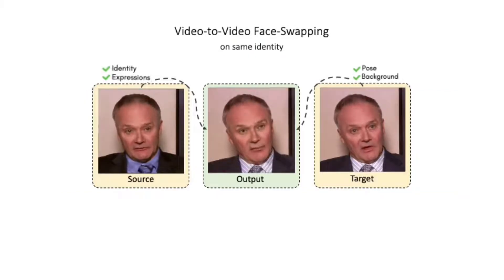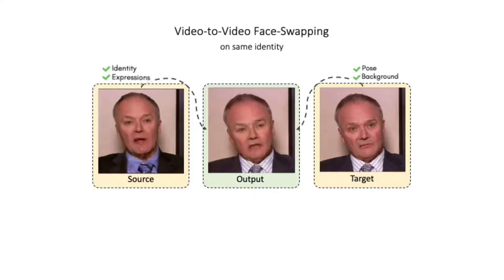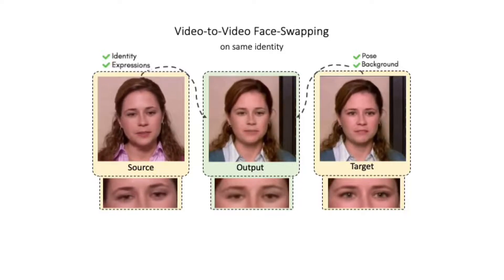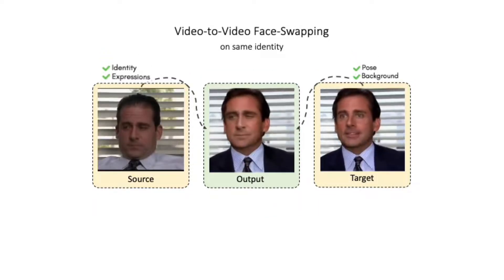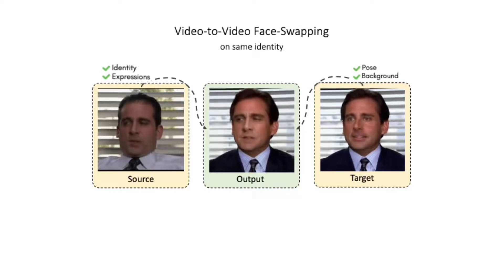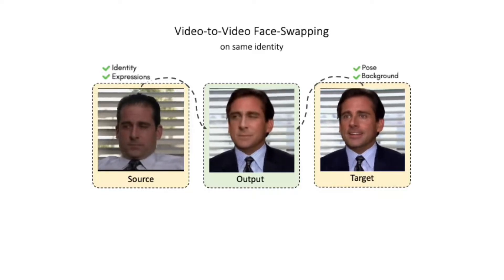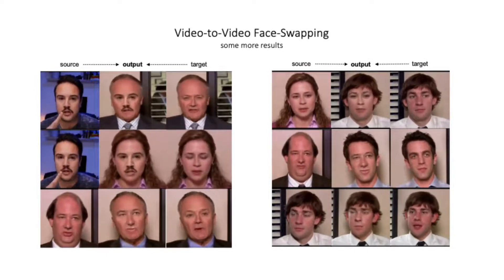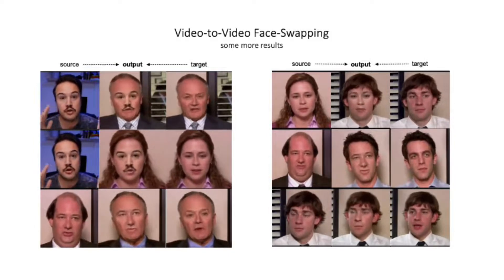Finally, we show some results on V2V face swapping for the same identity. In many cases, such as in movies, one might want to edit the expressions and lip movements of a previously recorded video with new expressions and lip movements. As can be seen, the identity is perfectly preserved along with the pose and background, and only expressions such as eye and lip movements are swapped from the source. Faceoff correctly blends color differences into a uniform color and pose and generates a coherent output. In all of the cases, Faceoff successfully preserves the desired properties — pose, background, identity, and expressions — with a uniform pose, identity, and temporally coherent motion.